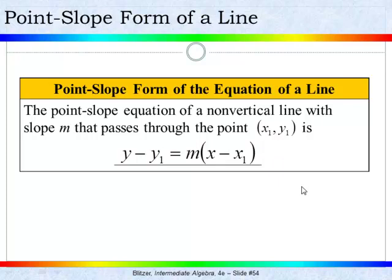Now in a problem you are generally going to be given or have enough information to find m, x1, and y1. And once you plug them in, the result is the equation that represents the line with slope m and that passes through x1, y1. Now let's use this formula in an example.